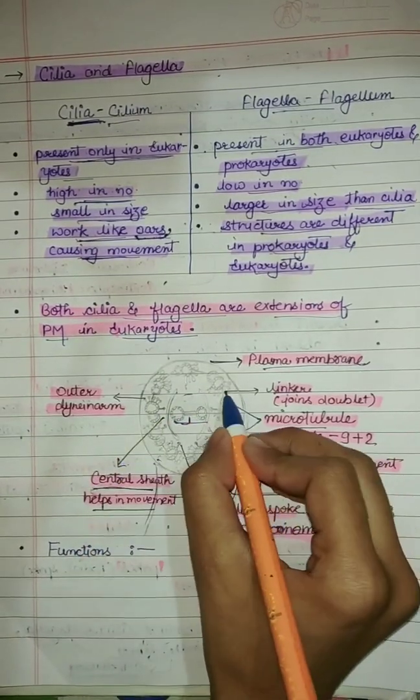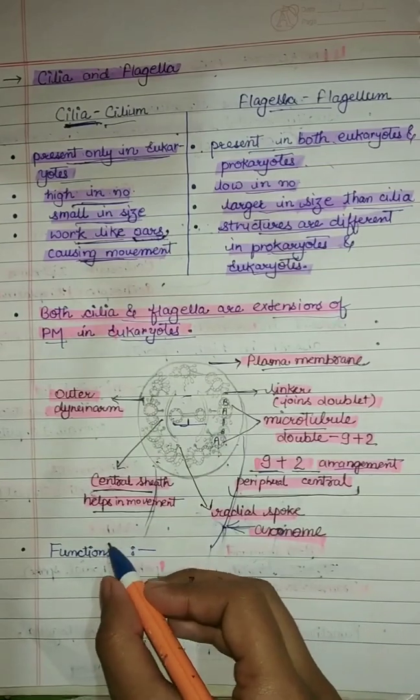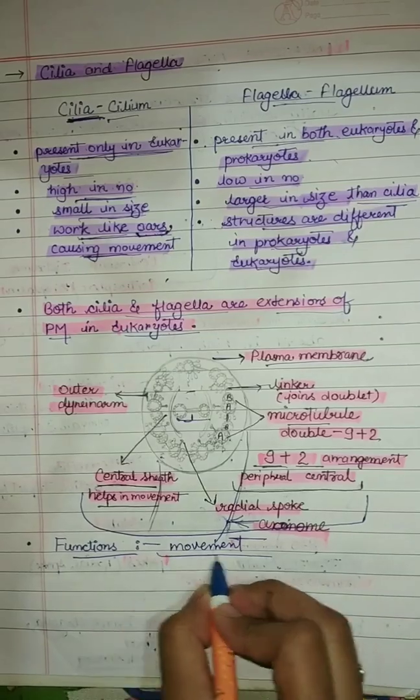The peripheral doublets are also interconnected by linkers, which are filament-like structures known as outer dynein arms. Cilia and Flagella have a centriole-like structure called the basal body. The main function of Cilia and Flagella is movement.